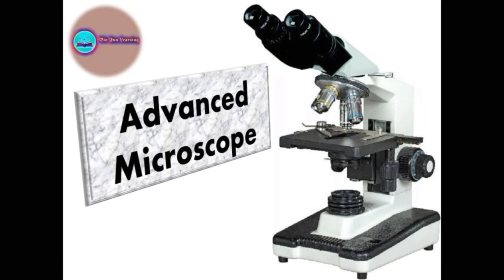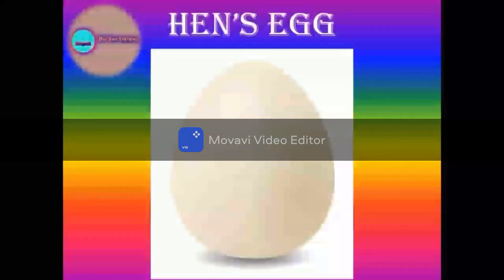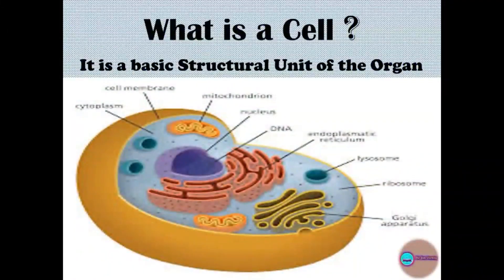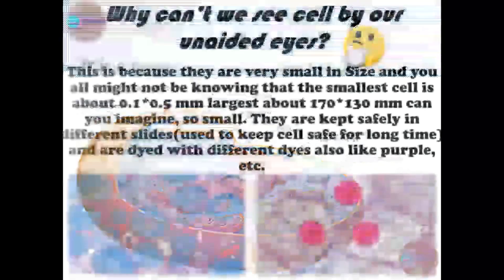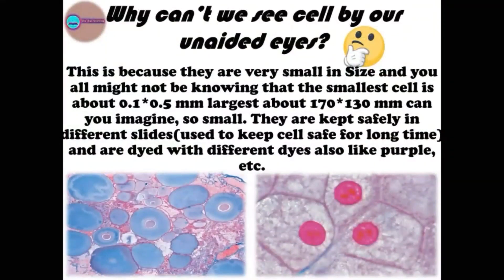The first microscope was discovered by Antony van Leeuwenhoek. The only exception is the hen's egg — it is a single cell and is big enough to be seen by the unaided eye. Cells are the basic structural and functional unit of all living organisms, and also the basic structural unit of all the organs.